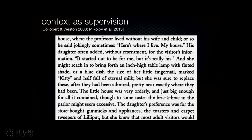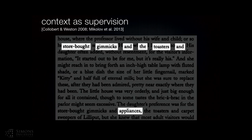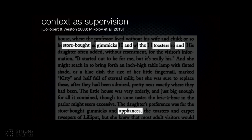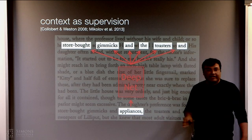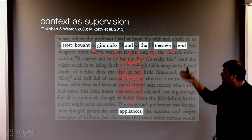Interestingly, in NLP they have a solution known as Word2Vec. The idea is that if you're trying to learn a representation for a word like 'appliance,' you try to predict the words in the context of this word — for example, 'store bought,' 'toasters,' and so on. Because you can go into paragraphs and see what words occur next to 'appliances,' you already have the ground truth. You can use those co-occurring words as ground truth to train this representation.